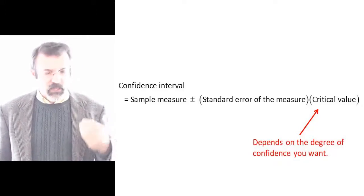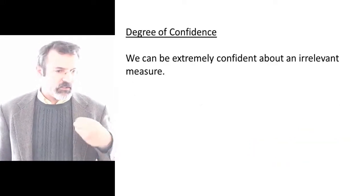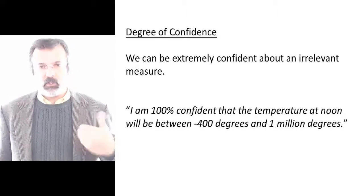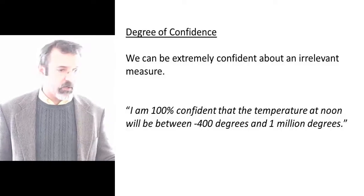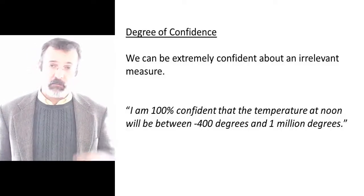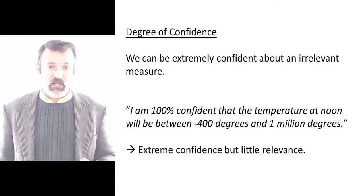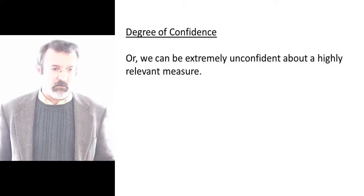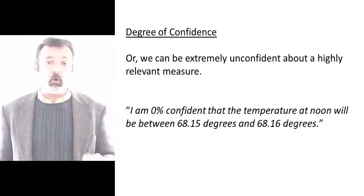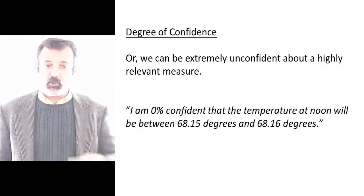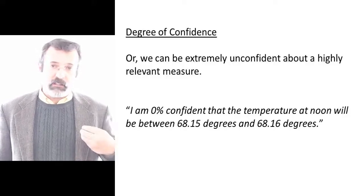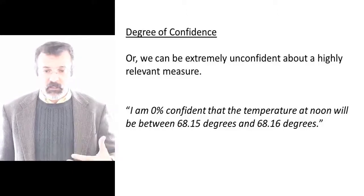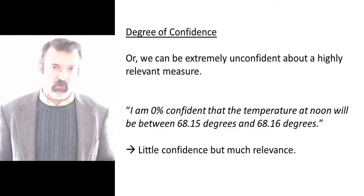Now there's a trade-off here. I can be extremely confident about a statement that is irrelevant. For example, I am 100% confident that the temperature at noon tomorrow will be somewhere between negative 400 and 1 million degrees — extremely confident about a statement that has little relevance. Conversely, I can be unconfident about a statement that has much relevance. For example, I am 0% confident that the temperature tomorrow at noon will be between 68.15 and 68.16 degrees — a statement with little confidence but much relevance.